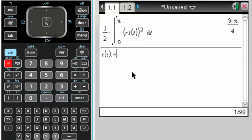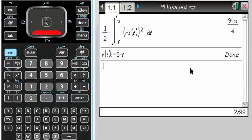r of t set equal to... that's colon equals. You have a key for that, which I always forget about because I type so often. r of t is set equal to whatever, it could just be 5t, something like that. Store it first. If it doesn't say done, you haven't stored it correctly.